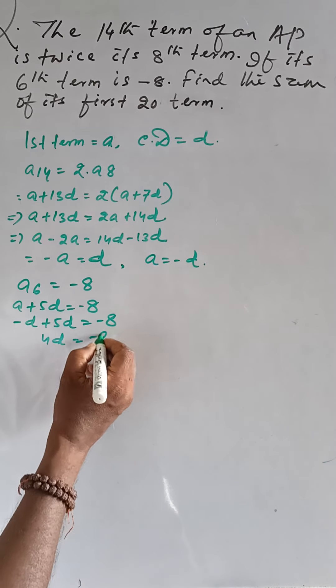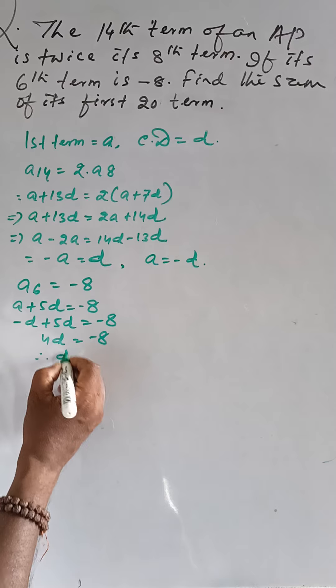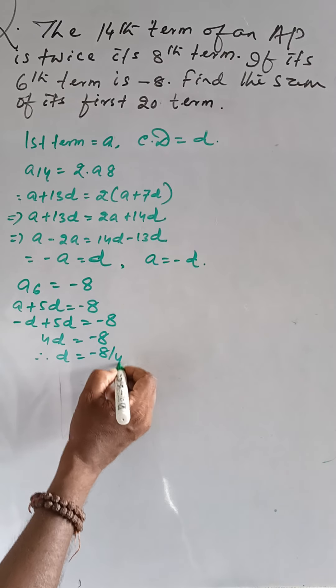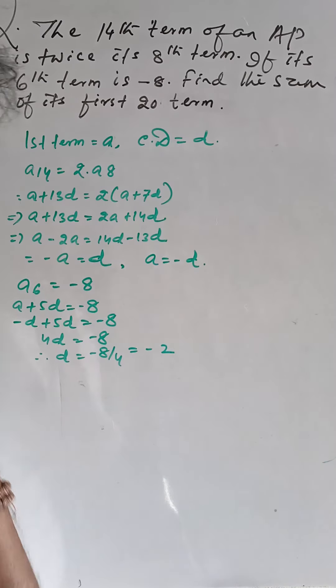minus D plus 5D is equal to minus 8. 4D is equal to minus 8, then D is equal to minus 8 by 4, that is minus 2.